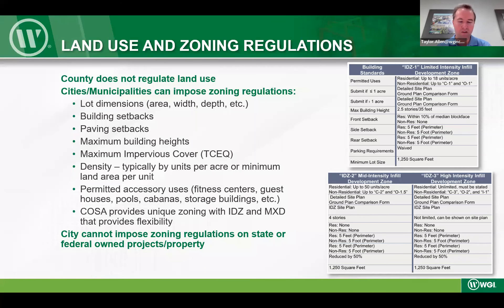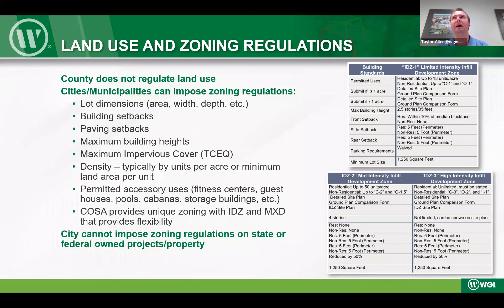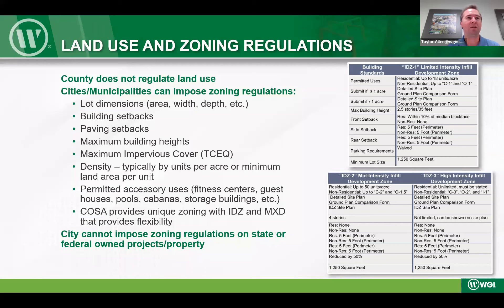The first topic is land use and zoning, implemented by the city of San Antonio — the county does not regulate this. For the vast majority of projects in the San Antonio area, your base zoning will dictate lot size requirements, setbacks, and additional buffers when abutting single-family residential or other residential uses. Zoning also dictates building heights in certain parts of the city, potential impervious cover limitations, and density on both multi-family and single-family residential.